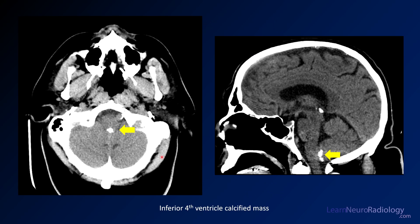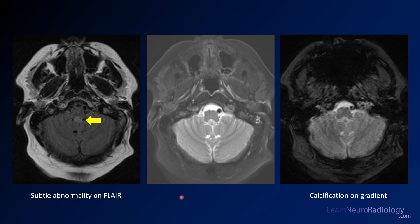On the CT it was a little hard to see on the axial images because it's midline, but there is calcification in the fourth ventricular outflow tract — a mass with calcification. On MRI there's a subtle rounded, well-demarcated mass in the fourth ventricular outflow tract just above the foramen of Magendie. The foramen of Luschka is visible on either side, and on the gradient you can catch a little of that calcification seen on CT.